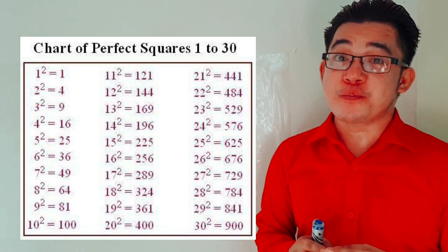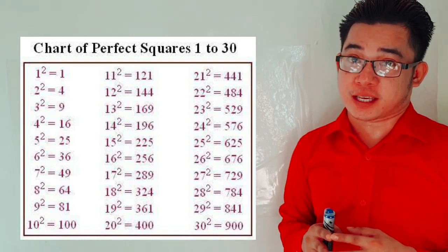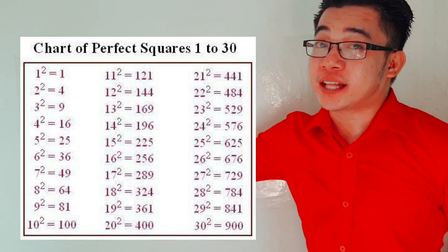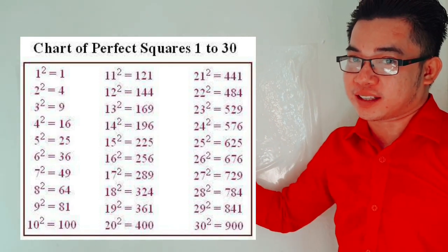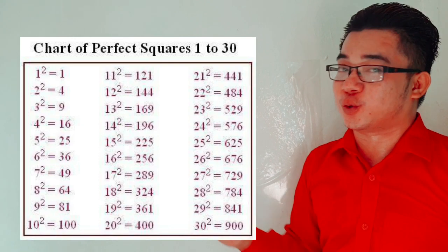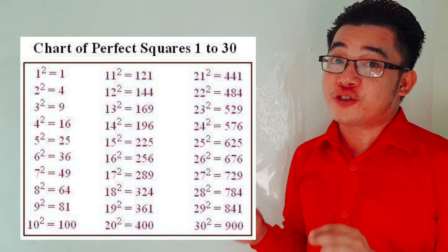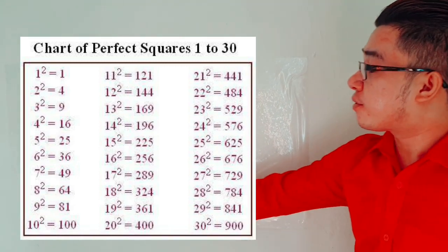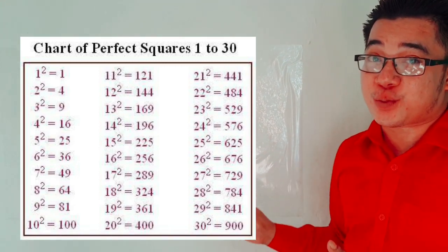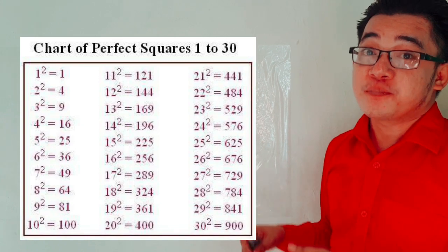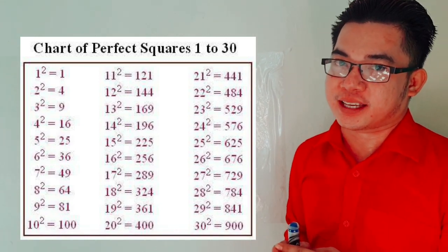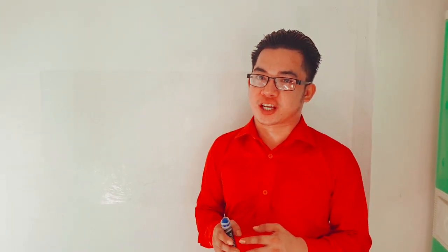In order to understand this lesson easily, I recommend you to memorize perfect square numbers from 1 to 30. For example, 1 times 1 is equal to 1, which means the square root of 1 is equal to 1. Then, 2 times 2 is equal to 4, and the square root of 4 is equal to 2. And 30 times 30 is equal to 900, so the square root of 900 is equal to 30. Now that you are familiar with perfect square numbers, you can now solve these equations.